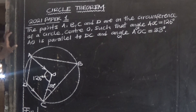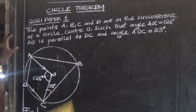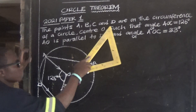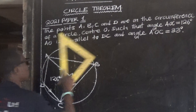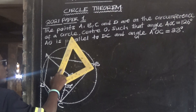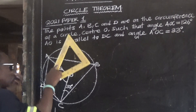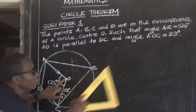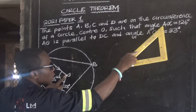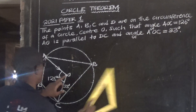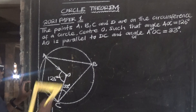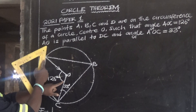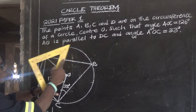Let's look at 2021 Paper 1. It says the points A, B, C, and D are on the circumference of the circle, and the circle has center O, such that angle AOC is equal to 126 degrees, and AO is parallel to DC.